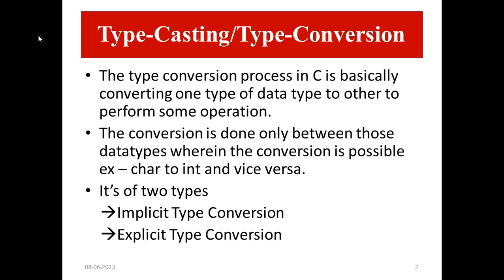In typecasting, the compiler automatically changes one data type to another one depending on what we want the program to do. For example, in case we assign a float variable with an integer value, the compiler will ultimately convert this int value into a float. The process of casting allows the programmer to make such type of conversions explicit or even force it in cases where it would not happen normally. Type conversion is another name for typecasting.